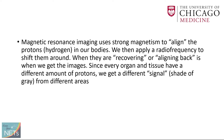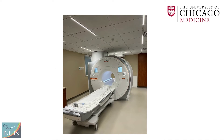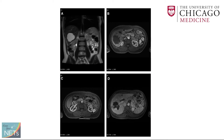Magnetic resonance imaging uses strong magnetism to align the protons or hydrogen molecules in our bodies. We then apply a radio frequency to shift them around, and when they recover or realign with the big magnet is when we get our signal. Since every organ or tissue has a different amount of protons, we get a different signal or shade of gray from different areas. The MRI machine's bore is a little longer than the CT, and that's the big magnet.